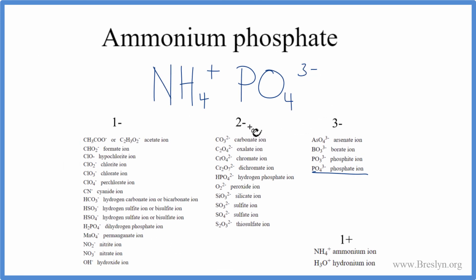So this is close to the formula for ammonium phosphate, but we have a problem. We have a positive charge here, and then we have a 3-. These need to add up to 0. Right now, they don't.